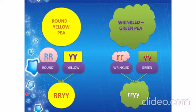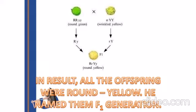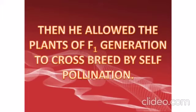In the F1 generation, combining the alleles — capital R and capital Y from one parent, small r and small Y from the other — all offspring in F1 generation were round and yellow seeds. He then allowed the plants of the F1 generation to cross-breed by self-pollination.